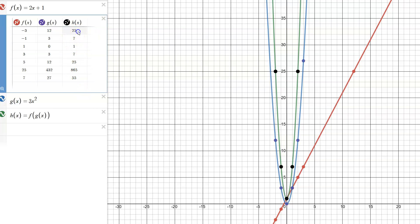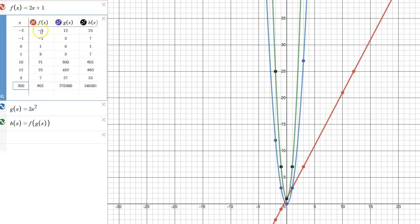We feed that into f, so f of 3 gives us 7, and so h of negative 1 should be 7. This should work for every input that we come through here. Let's say we're interested in at x equals 10, what is h's value? Well first we go to g. 3 times 10 squared is 300, we feed that into f. What is f of 300? F of 300 is 601.